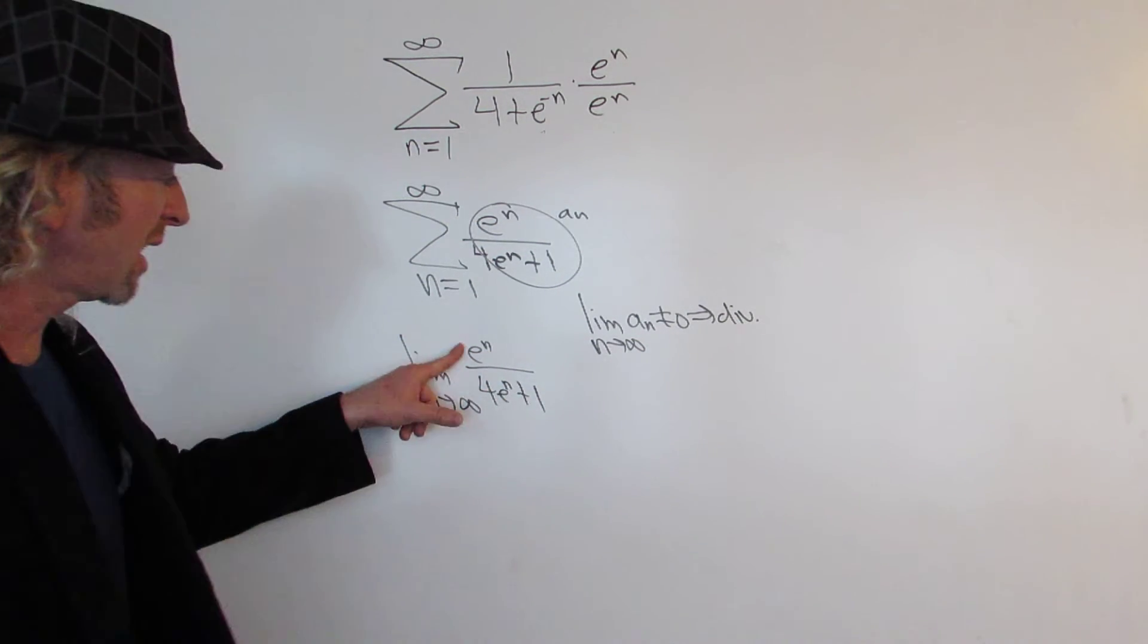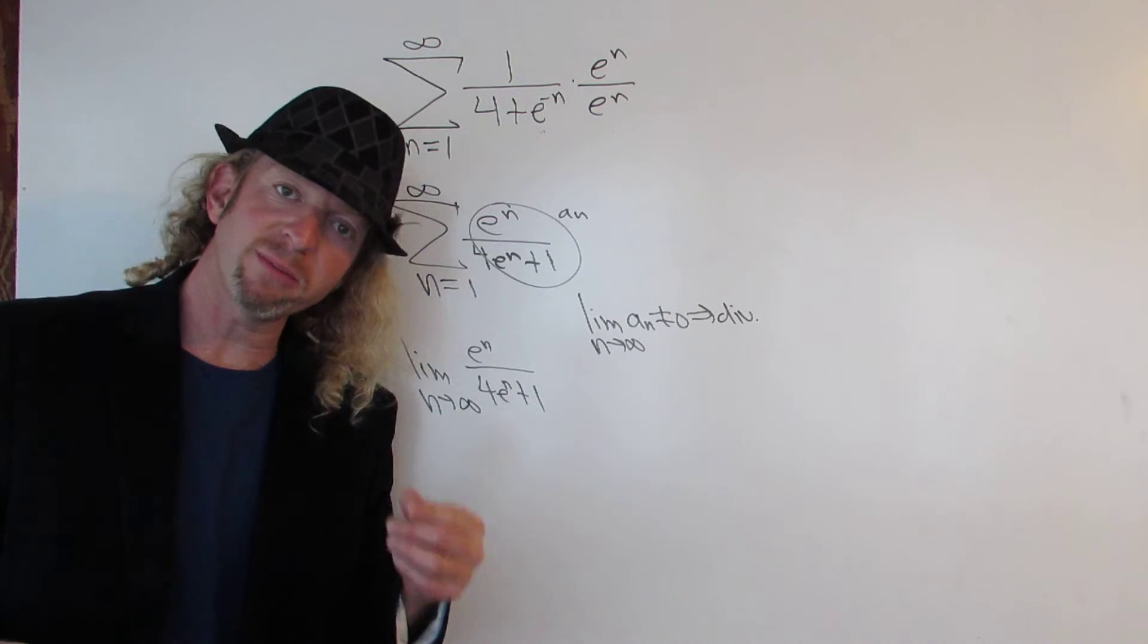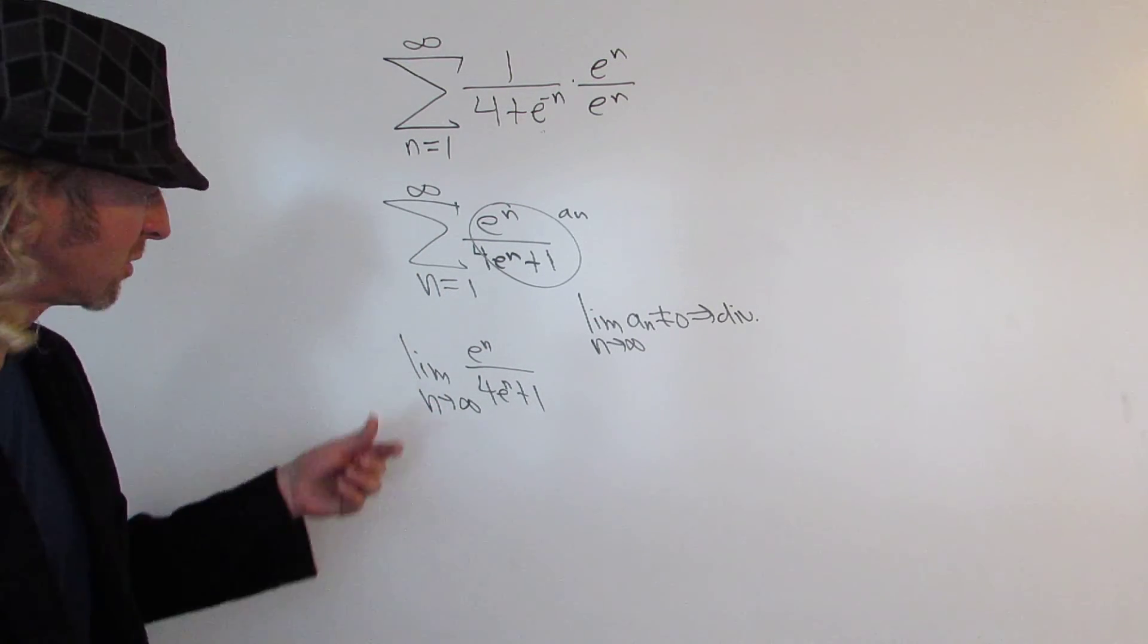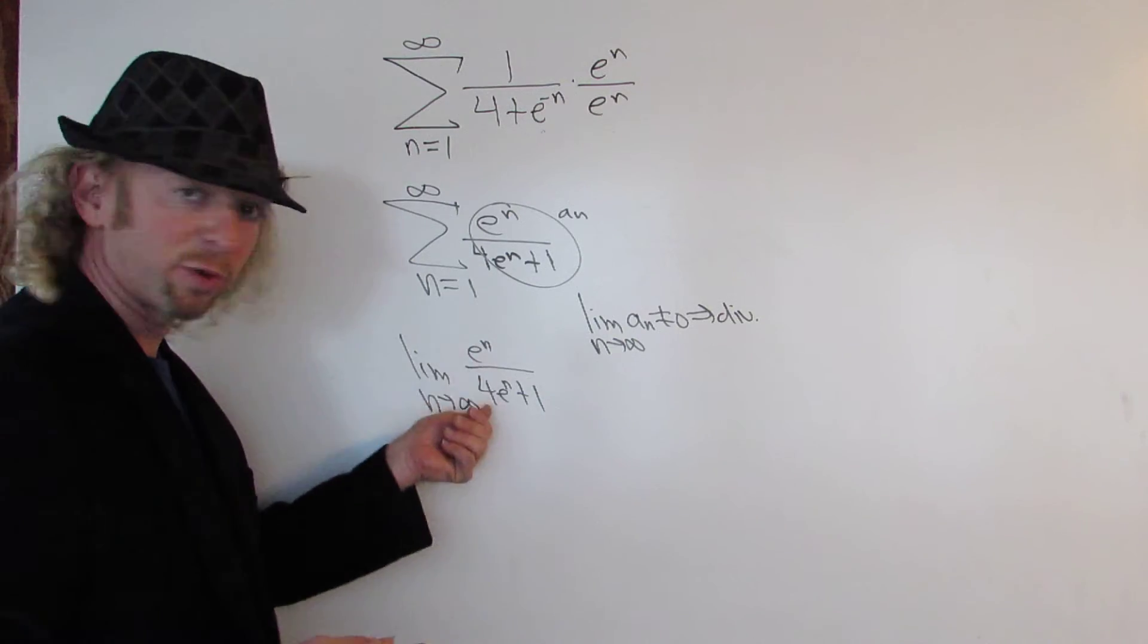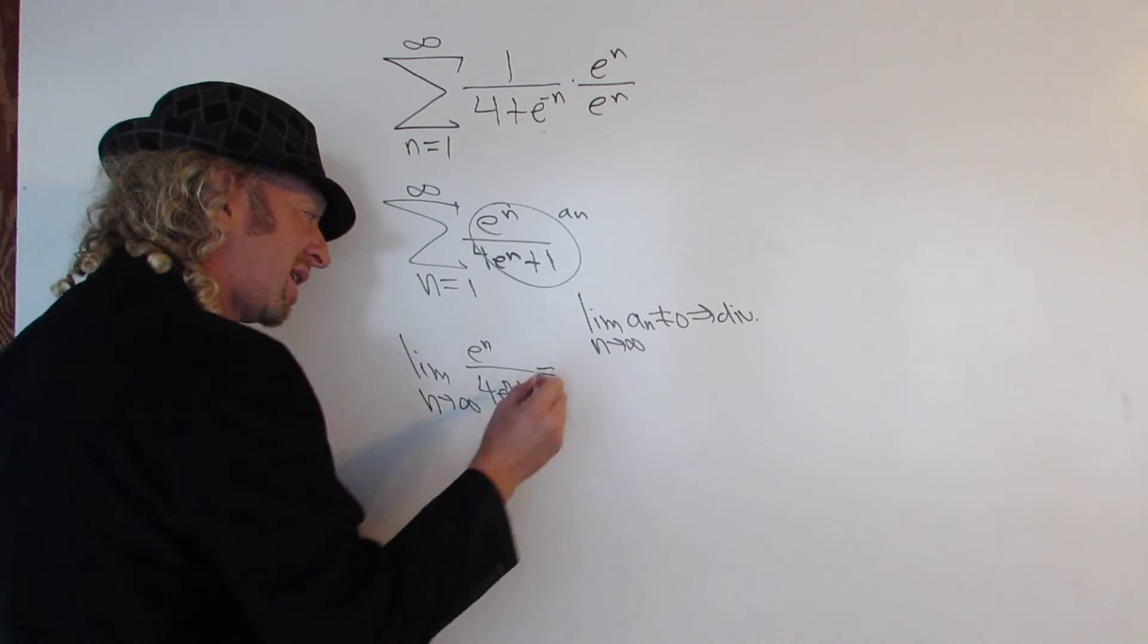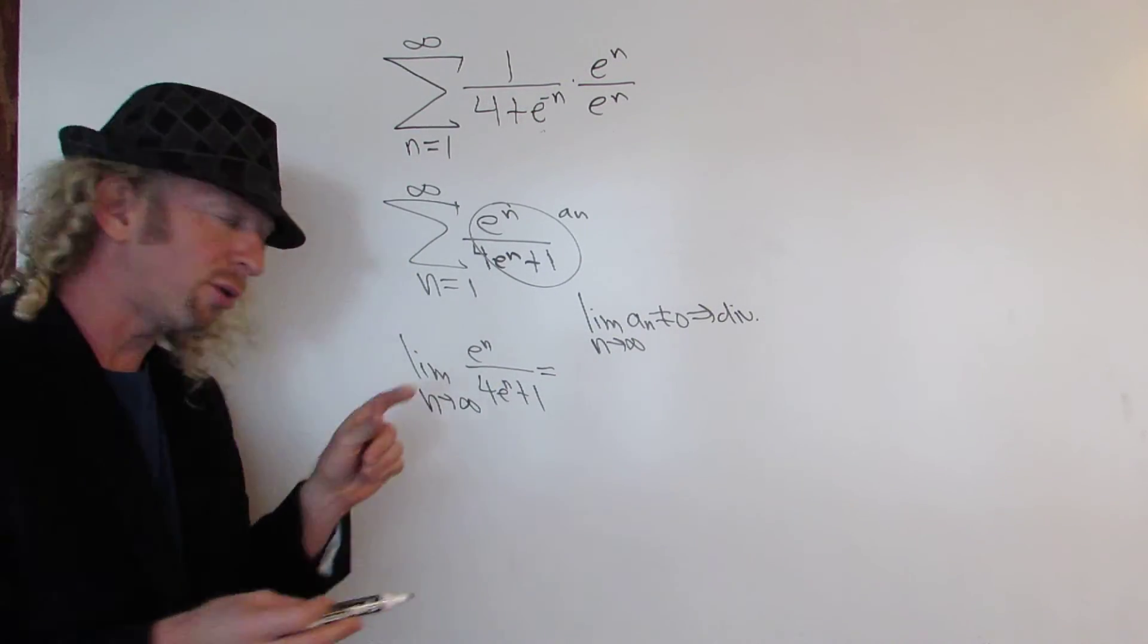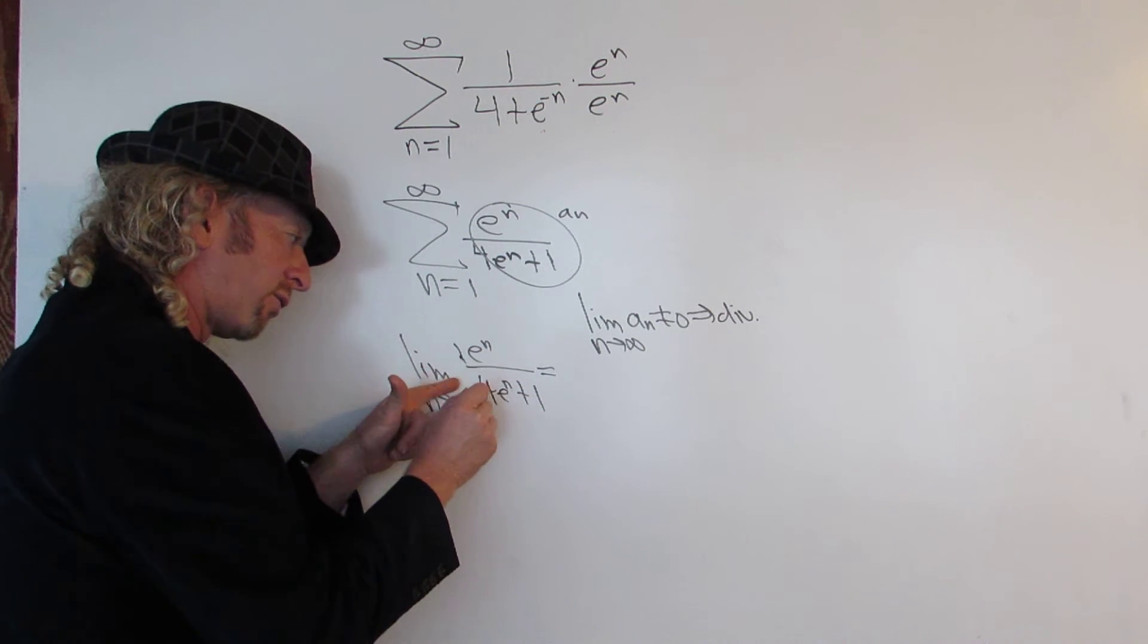So e to the n and 4 e to the n plus 1 pretty much grow at the same rate. So they're both exponentials with base e. So in this case, the answer is going to be the ratio of the leading coefficients. So it's 1 over 4.